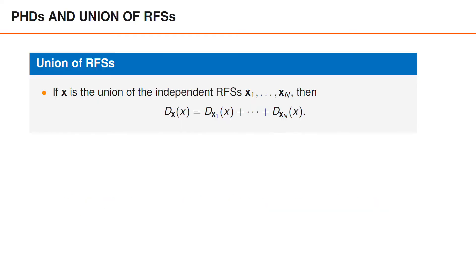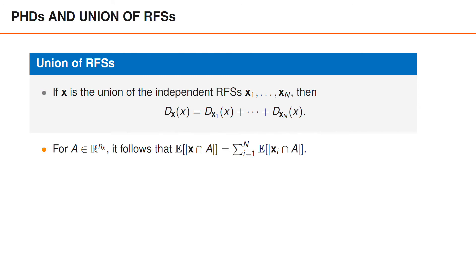A final result that will help us express the PHD of both multi-Bernoulli and Poisson-multi-Bernoulli random finite sets is the PHD of the union of random finite sets. Suppose boldface x is the union of N independent random finite sets x1 to xN. The PHD of boldface x is then the summation of the PHDs of x1 to xN. Integrating both sides over some area A gives the expected number of objects in A as the sum of the expected numbers in all different sets x1 to xN. It should be noted that this holds under the assumption that the probability that two of the sets contain the same element is zero.